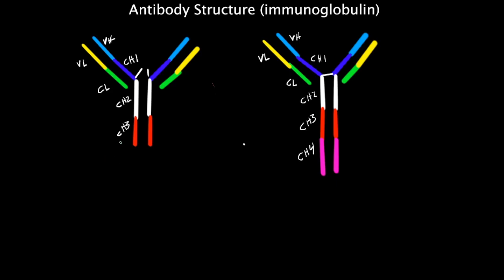They're composed of two identical heavy chains. Right here, this is your heavy chain. So I labeled them heavy chain. This is an H for heavy. Then you have two identical light chains, so light chain, light chain, and then we'll talk about this one over here in a second.